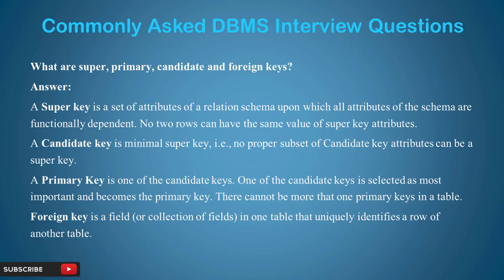To understand these keys, let us take an example. Suppose there is a database with a student table having attributes: student number, name, phone number, state, country, and age. Now we will understand which of these is a super key, candidate key, primary key, and foreign key. A super key is any set of attributes that can uniquely identify a row — for example, student number alone, or student number combined with student name, can be a super key.